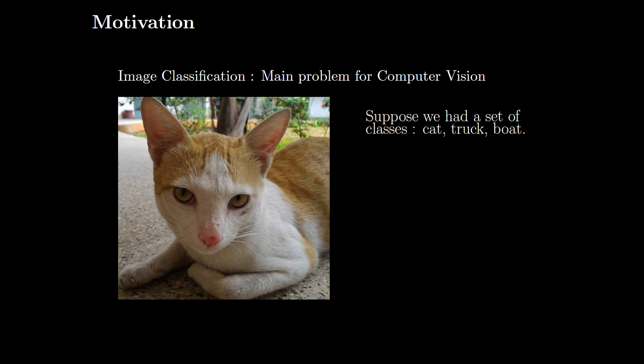Hello all. Let us look into the motivation for using convolutional neural networks instead of multilayer perceptrons in problems such as image classification. In image classification, we are given a set of images and we need to classify them into a set of given classes. For example, consider a set of classes such as cat, truck, and boat.